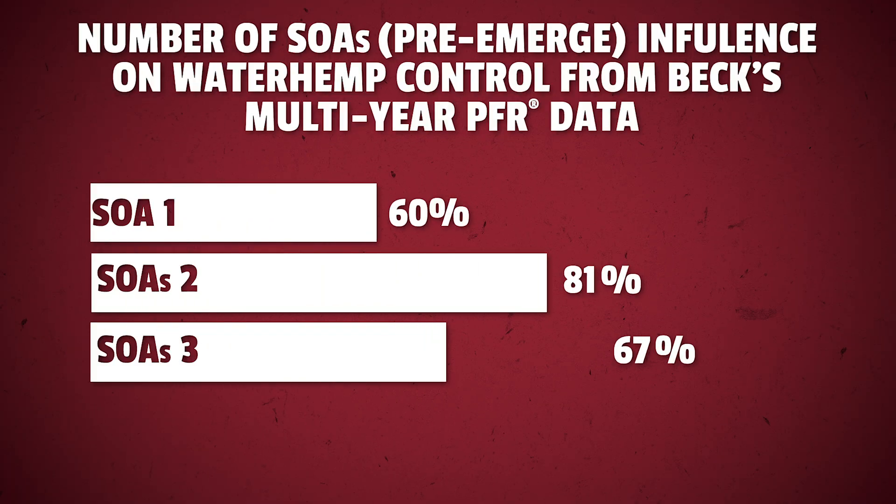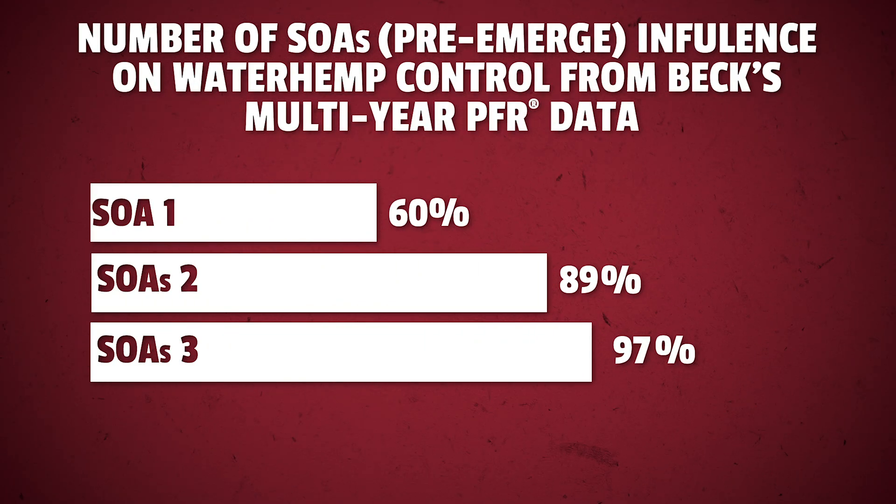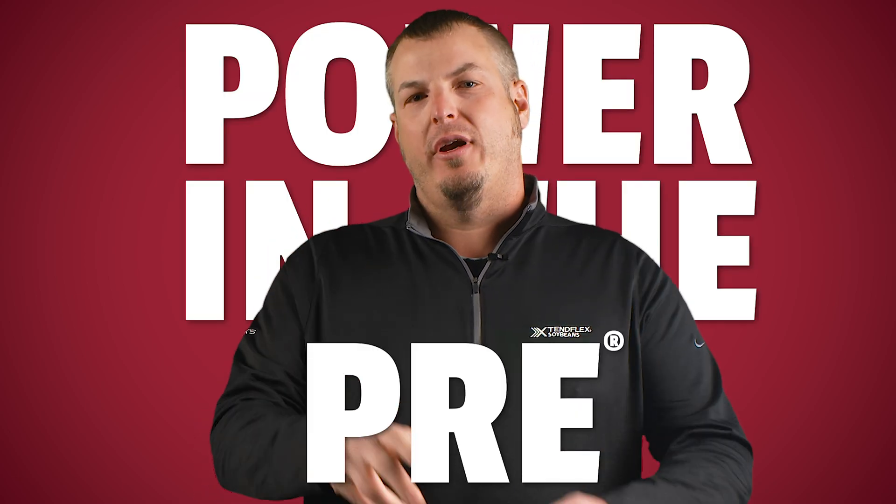The first and most obvious answer is the use of herbicides. After all, a soybean is only as good as the herbicide system behind it, so developing an effective herbicide program is essential. Our multi-year data has demonstrated the impact and importance of utilizing a pre-emergence program with multiple sites of action. This graph shows the visual control percentage on waterhemp populations when one of three sites of action are used in a pre-emergence application. The foundation to a successful weed control program starts with the power in the pre.